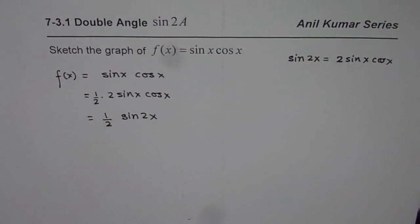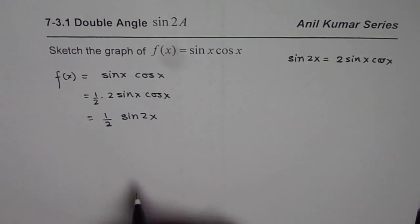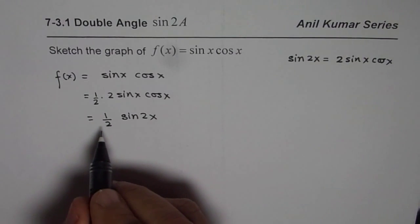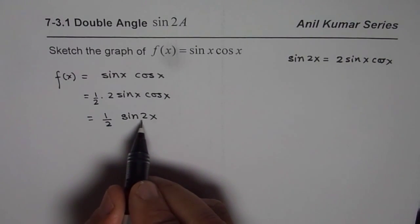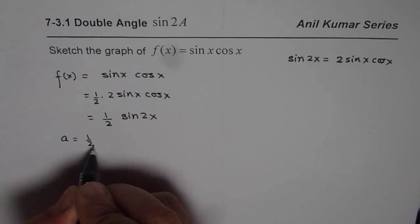Now it is easy for us to sketch the graph for this given function where f(x) becomes half of sine 2x. That means the amplitude a is half for us.